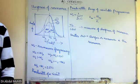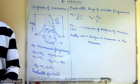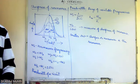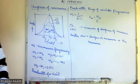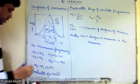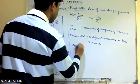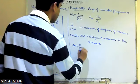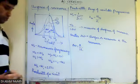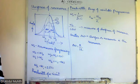Now, the next one. Delta Omega can also be written as R by two L — this is from the derivation.